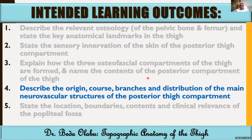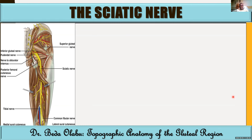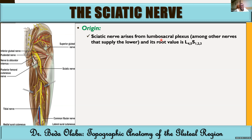Having talked about the posterior muscular compartment and its structures, we can now look at the major neurovascular structures within it — the nerve and the arteries in greater detail. The main nerve of the posterior compartment is the sciatic nerve. Let's talk about the sciatic nerve with clarity and to completion.